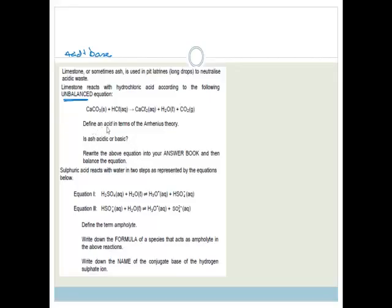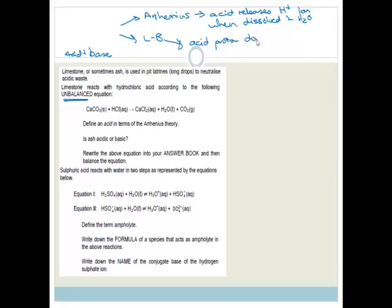Now it says define an acid in terms of the Arrhenius theory. You need to know the difference between the Arrhenius theory and the Lowry-Brønsted theory. The Arrhenius theory says it's all to do with things dissolving in water. Arrhenius says that an acid releases a hydrogen plus ion when dissolved in water, whereas Lowry-Brønsted says that acids are proton donors.